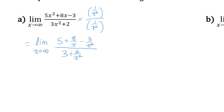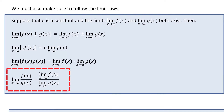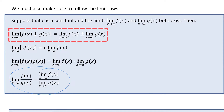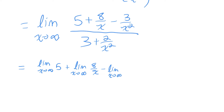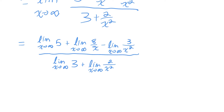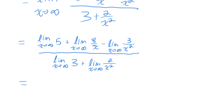We can apply basic limit rules: the limit of a quotient of functions equals the quotient of the limits, and the limit of a sum or difference of functions equals the sum or difference of the limits. Those rules tell me I'm allowed to find the limit as x approaches infinity of each of the terms individually — so of 5, of 8 over x, of 3 over x squared, and the same in the denominator.